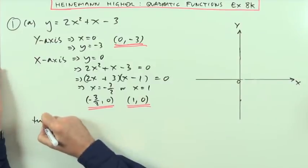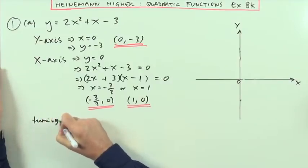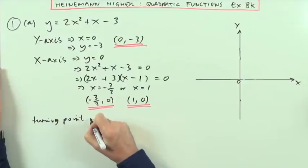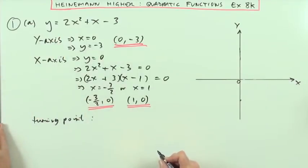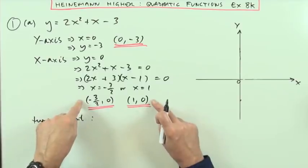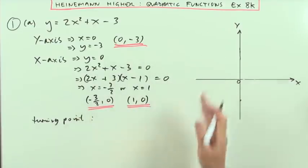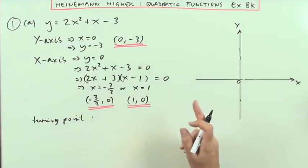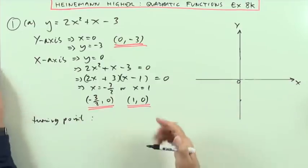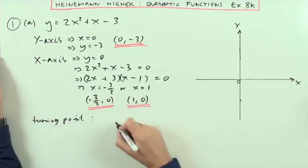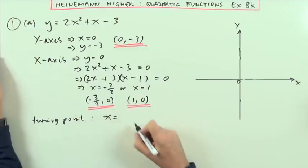Now for the turning point, I could differentiate it. And then equate it to 0 and so on. But if I've gone to the trouble to find the 0s, then I know the turning point is going to be in the middle of them, because quadratics are symmetrical. If it wasn't a quadratic, I couldn't assume that the turning points are halfway between the 0s. But in the case of quadratics, they are.